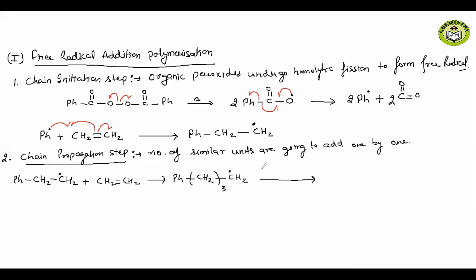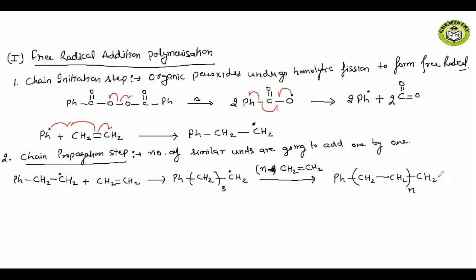If I have a total of N molecules of CH2=CH2, they all add one by one. The chain will be written as Ph-(CH2-CH2)n-CH2-CH2 radical. In this way the chain is getting longer and longer.